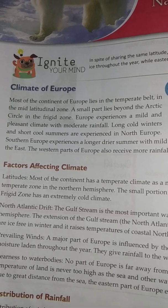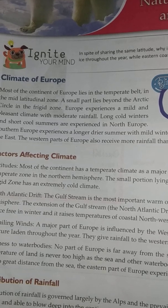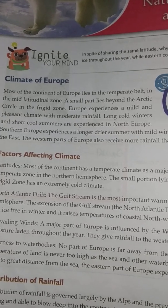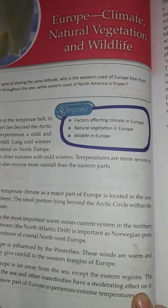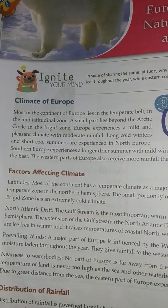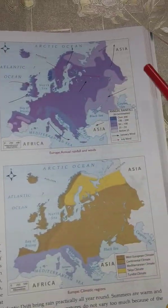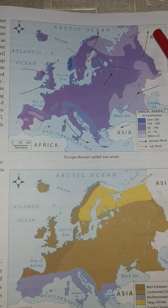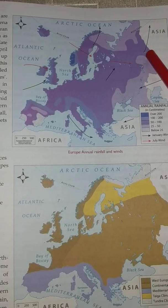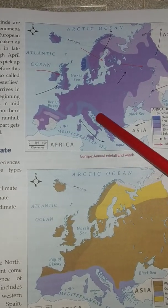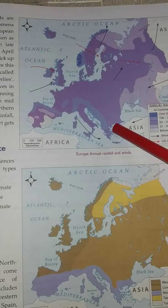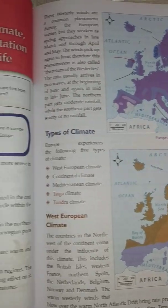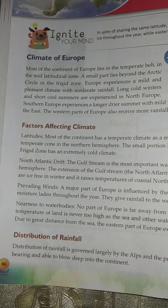Southern Europe experiences a longer, drier summer. Comparing Southern Europe with Northern Europe, Southern Europe experiences a longer drier summer with mild winters. Temperatures are more severe in the east because the eastern part lies far away from the seas and water bodies. The western part receives more rainfall than the eastern part because those areas are closely located to the sea.